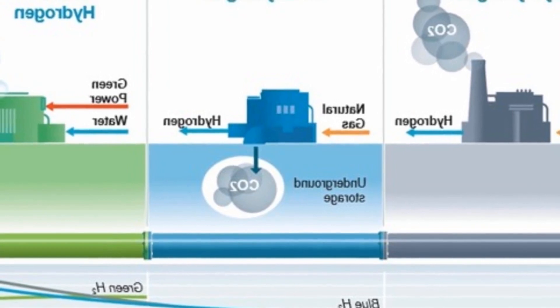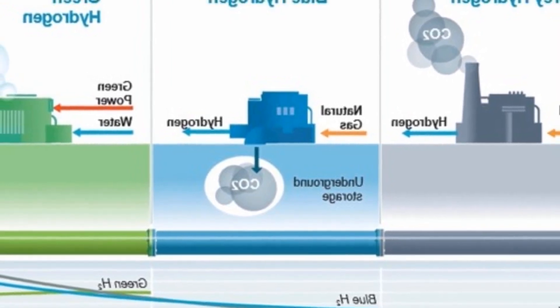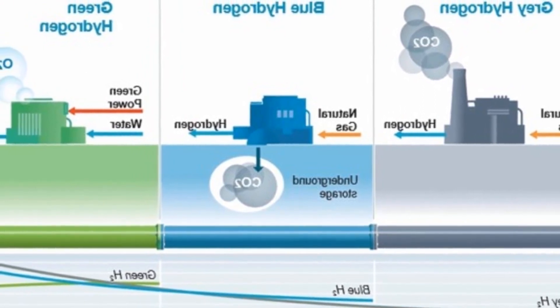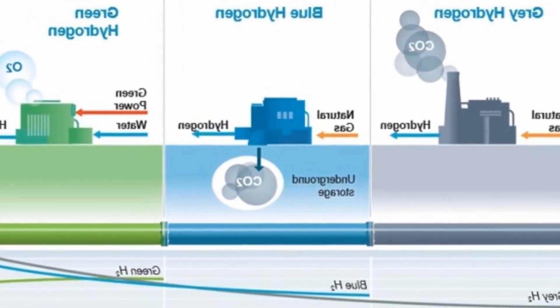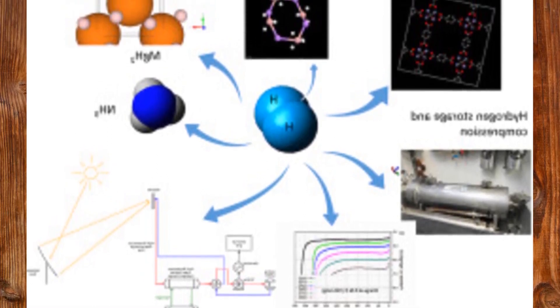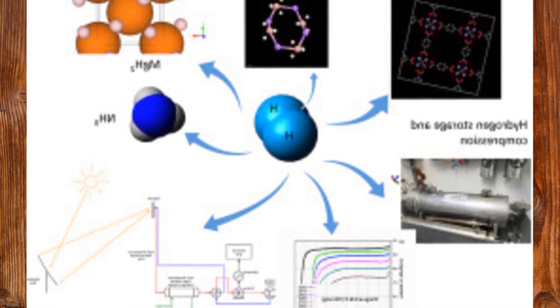On the other hand, the worst mistake the government could make would be to throw the baby out with the bath water. Hydrogen credit was part of the Inflation Reduction Act, which was passed by Congress and signed by President Joe Biden last summer.